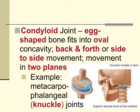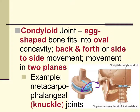The condyloid joint — also called the ellipsoid joint — describes the shape of the surfaces where the bones meet. It is an elliptical shape: one surface is egg-shaped and convex, and the other is an oval concave dip. When those two bones come together, it creates two planes of motion — rocking back and forth in one direction and also in the other. This type of joint is found at the metacarpophalangeal joint, which is the knuckle joint, and also between the skull and C1, the atlas bone.